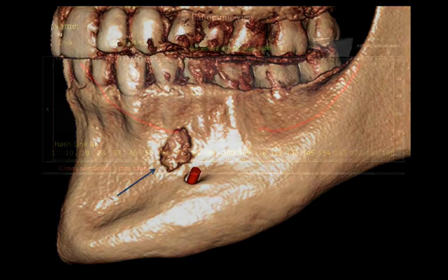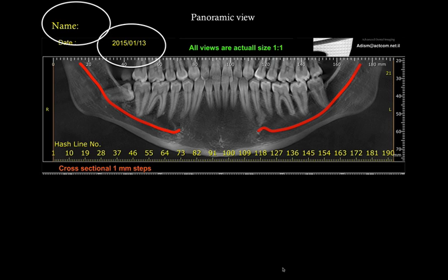Anytime we're looking at a CT scan there are two things I always start with. Number one: check the patient's name and the date to make sure you're looking at the right scan and that it's current — we often look at different scans for the same patient. Confirm the date, confirm the name. Then we look at the panoramic view for an overview. We can see there is an impacted wisdom tooth on the lower right, but we'll focus on the periapical area of the lower left premolar and identify which sections are relevant for this lesion.